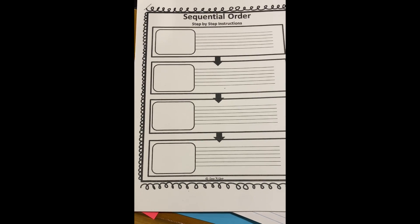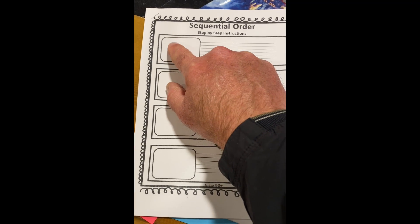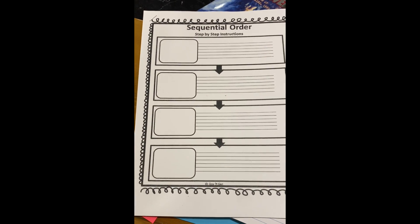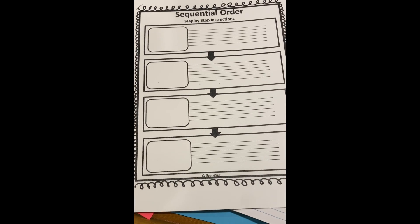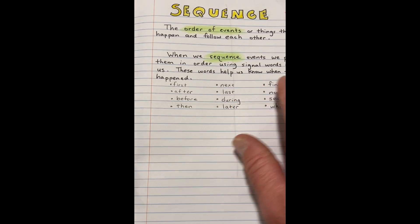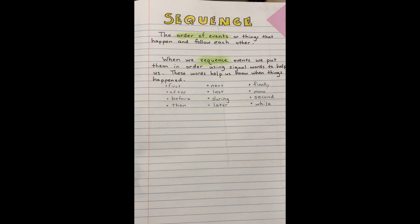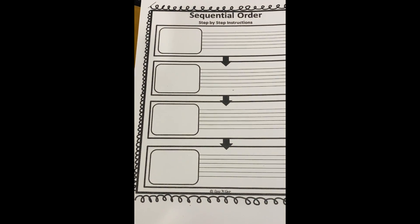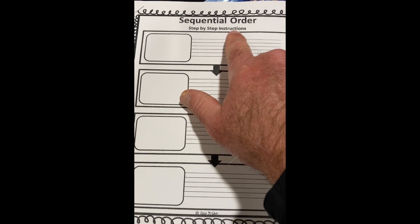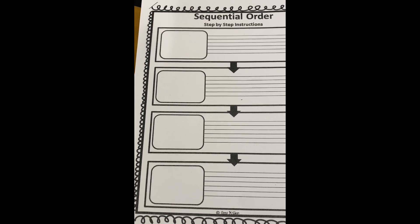Sometimes you'll notice that with sequential order, they just put like number one, number two, number three, and just number it down. This is what you do in order. But we're going to try to focus in and keep using, if we can, these key words first and next and after that. But oftentimes you will see with sequential order, especially when it's instructions, following instructions, they might just number them down the side.